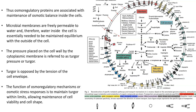Microbial membranes are freely permeable to water. Therefore, water inside the cell is essentially needed to maintain equilibrium with the outside of the cell. The pressure placed on the cell wall by the cytoplasmic membrane is referred to as turgor pressure or turgor, which is opposed by the tension of the cell envelope. The function of osmoregulatory mechanisms is to maintain turgor within the limits that allow the maintenance of cell viability and cell shape.